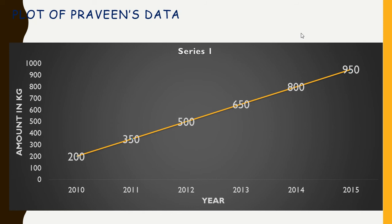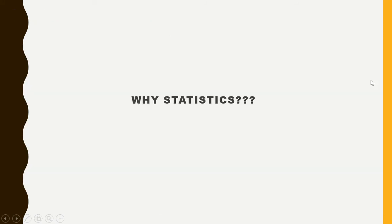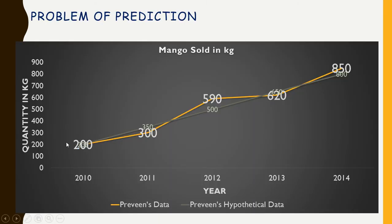However, understand that in real life we can hardly get a trend like this. Nothing is this straightforward in real life, and this brings us to the very important question: why statistics? Probably Praveen's data is irregular. In that case it is difficult to predict what the value of sales is going to be in the coming year — is it going to go straight, go up, or go down? It is difficult to think it out.